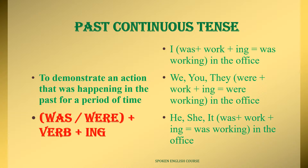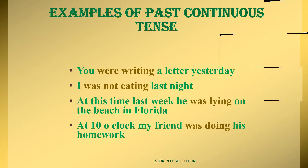In past continuous tense, verb plus ing is always required. Some examples: 'I was not eating last night' — a negative sentence for a past action. 'At this time last week, he was lying on the beach in Florida.' 'At 10 o'clock, my friend was doing his homework.'